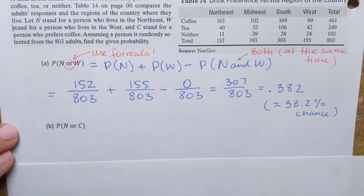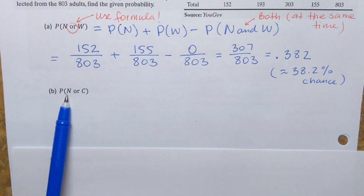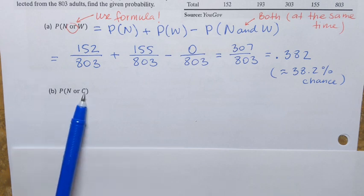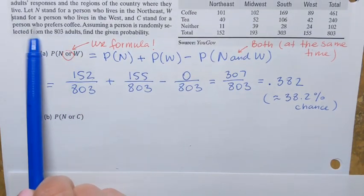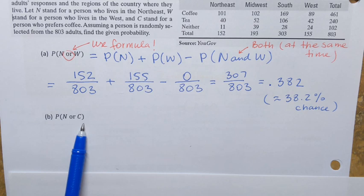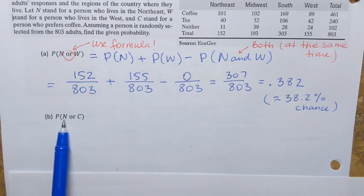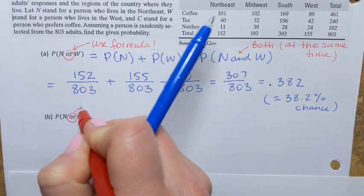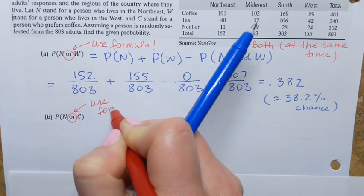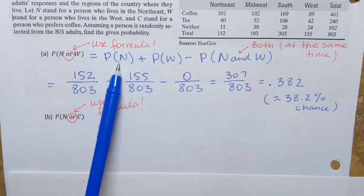Now let's try a different question. This time we have to find P of N or C. Remember, N stands for the northeast and C stands for a person who prefers coffee. In other words, find the probability that a randomly selected person from the 803 adults either lives in the northeast or prefers coffee. Again, since we see OR, we use the general addition rule formula.